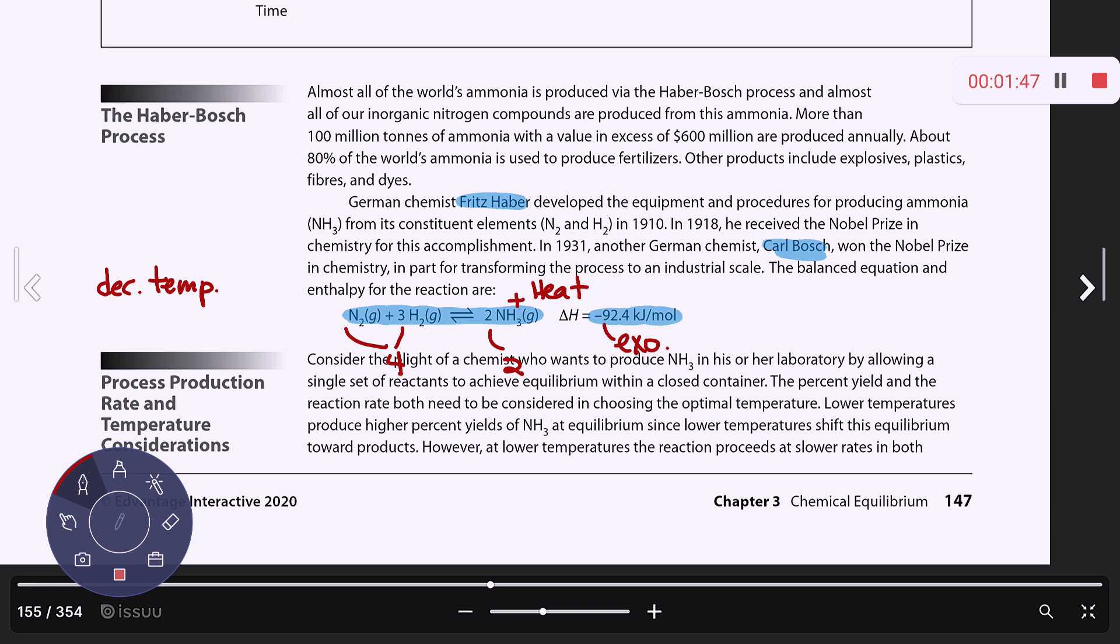So you would want to decrease the volume, which will cause an increase in pressure, and then that will cause you to shift to the right to relieve some of that added pressure.